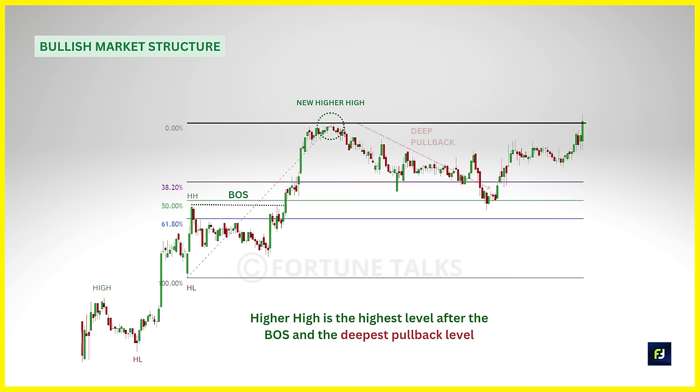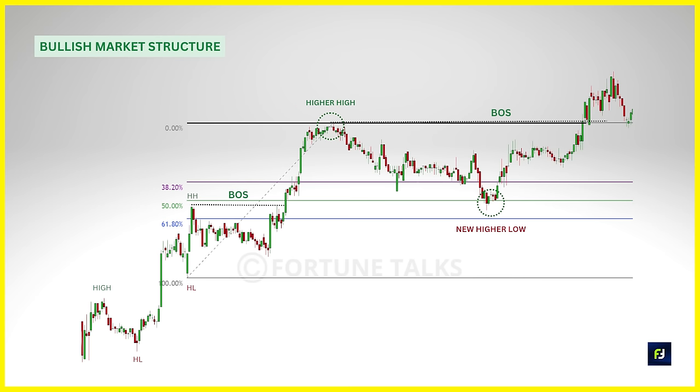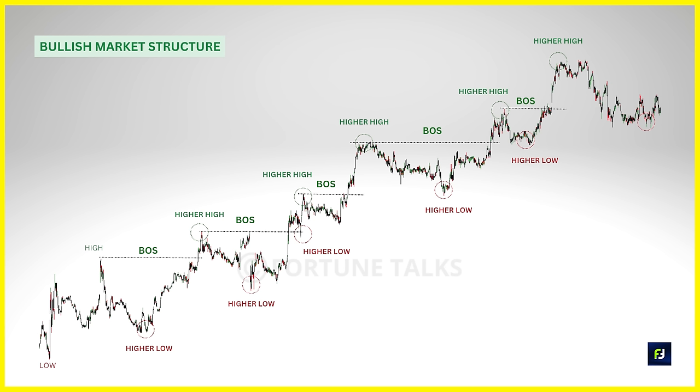Once we have identified a deeper pullback using the Fibonacci retracement tool, we can mark the highest point after the previous Break of Structure as the higher high level. Now, if the price moves higher again and breaks and closes above the recent higher high, we have another bullish Break of Structure, and this confirms the higher low level — which is in fact the deepest pullback before the BOS. In short, a new higher high is confirmed only after a deeper pullback that sweeps all previous retailer liquidity below the internal or minor swing lows.